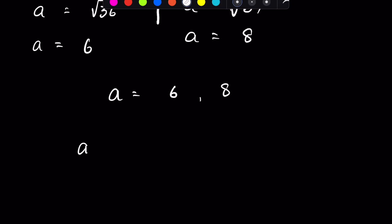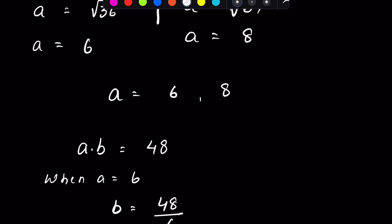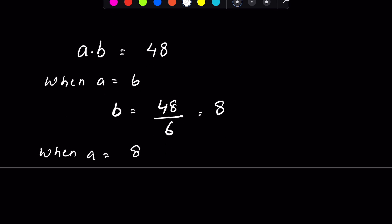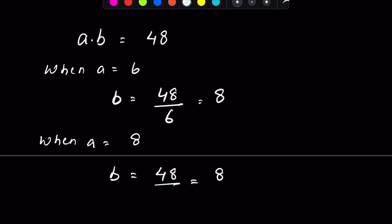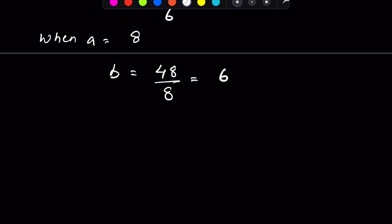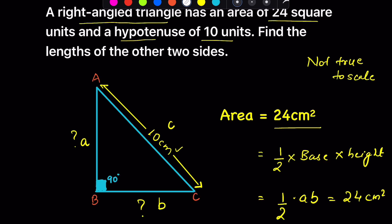From equation 1, a × b = 48. When a = 6, b = 48/6 = 8. When a = 8, b = 48/8 = 6. So the three sides of the triangle are 6, 8, and 10.